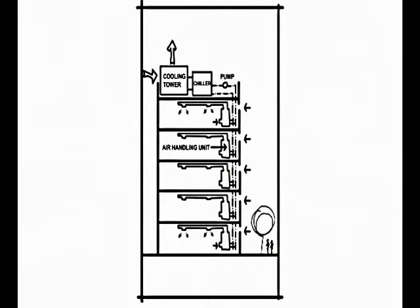Here we see the compression refrigeration diagram that we've been staring at, only in a more familiar setting. Water, chilled by the evaporator side of a rooftop chiller, the cold side, feeds air handling units, each serving its own floor.